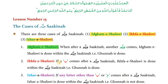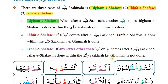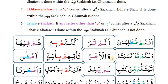The second case is Ikhfa Shafawi. If a Ba comes after a Meem Sakinah, Ikhfa Shafawi is done within the Meem Sakinah. So if Meem comes after Meem Sakinah, Idghaam Shafawi will be done, and if Ba comes after Meem Sakinah, Ikhfa Shafawi will be done. Both Idghaam and Ikhfa Shafawi are done with ghunnah.